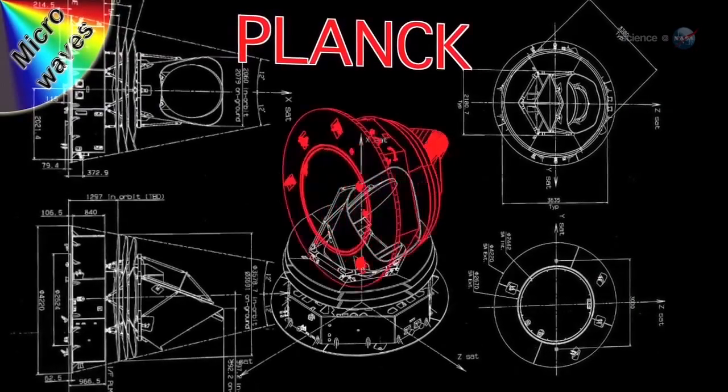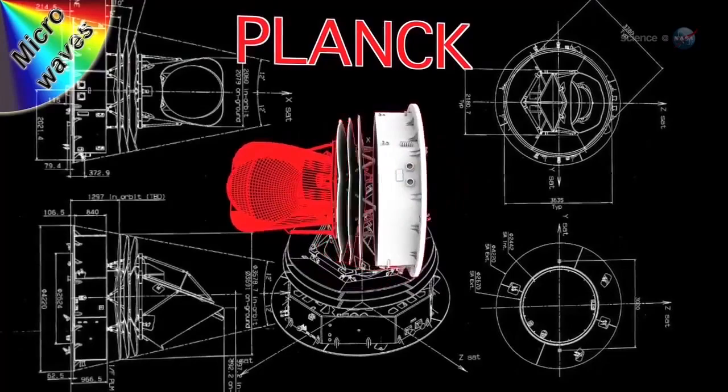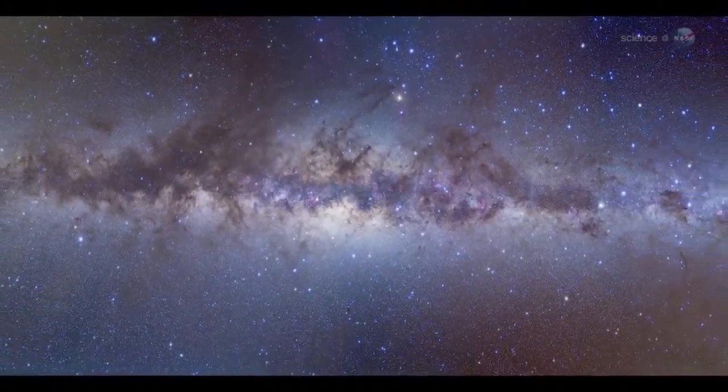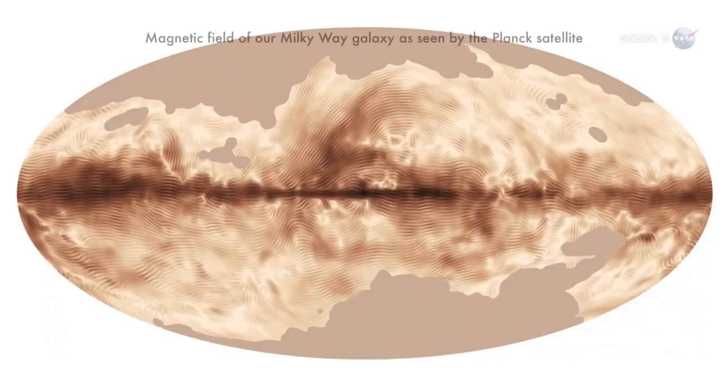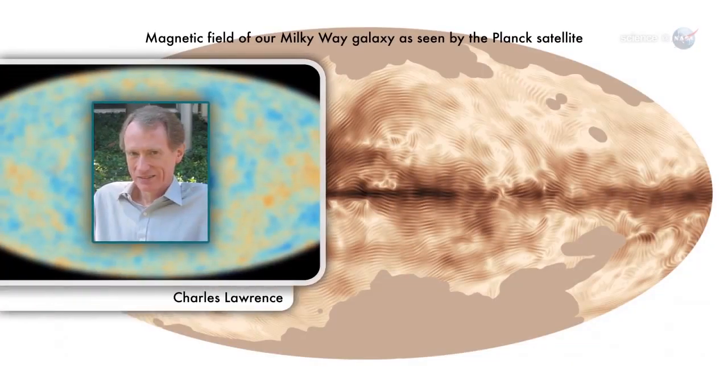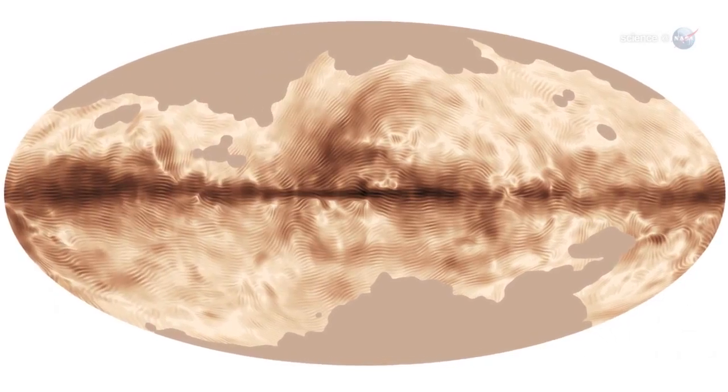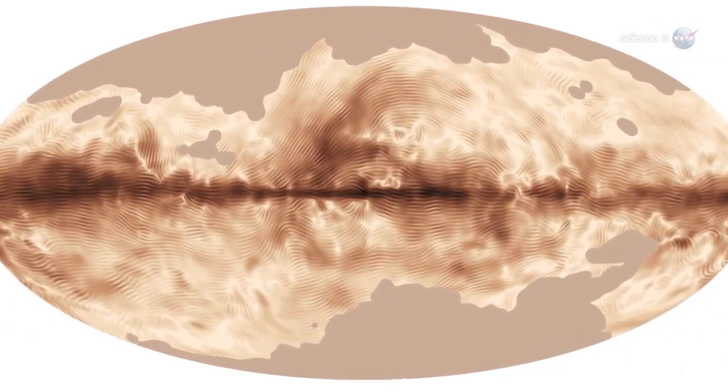Researchers working with data from the European Space Agency's Planck spacecraft have mapped the magnetic field of the entire galaxy. The Milky Way's magnetic field stretches across more than 100,000 light-years, says Charles Lawrence, the U.S. Planck project scientist at NASA's Jet Propulsion Laboratory. And Planck has done a magnificent job mapping its structure.